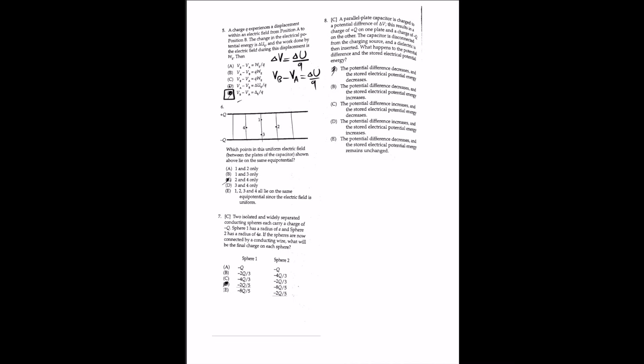For question 6, which points in the uniform electric field between the plates of a capacitor lie on the same equipotential? Because the electric field is uniform, the potential varies linearly with distance from either plate, and ΔV = Ed. Points 2 and 4 are at the same distance from the plates, so they lie on the same equipotential. Equipotentials are planes parallel to the capacitor plates. Options A (1 and 2), B (1 and 3), D (3 and 4), and E are not correct.